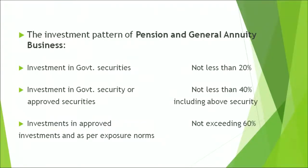The investment pattern of pension and general annuity business is as follows. Investment in government securities should not be less than 20%. Investment in government or approved securities should not be less than 40%. Investment in approved investment as per the exposure norms should not exceed 60%.